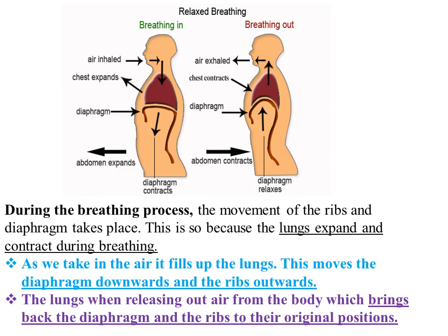During the breathing process, the movement of the ribs and diaphragm takes place because the lungs expand and contract during breathing. As we take in air, it fills up the lungs, which moves the diaphragm downwards and the ribs outwards. The first picture on the left side shows what happens during inhalation.